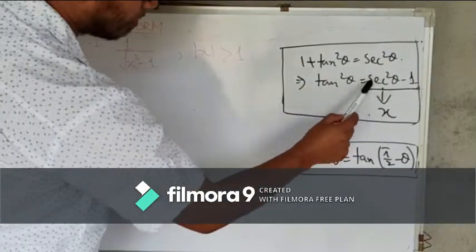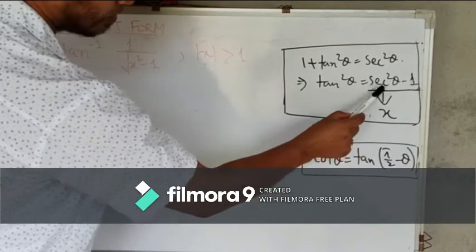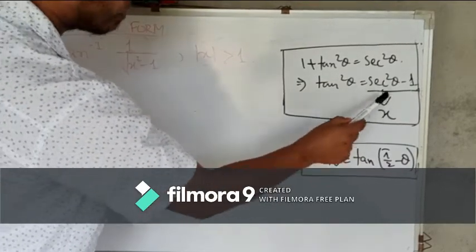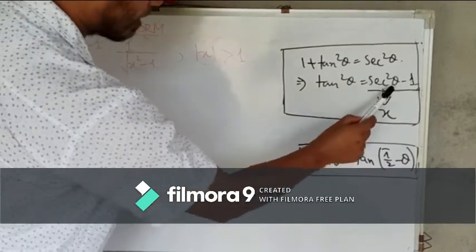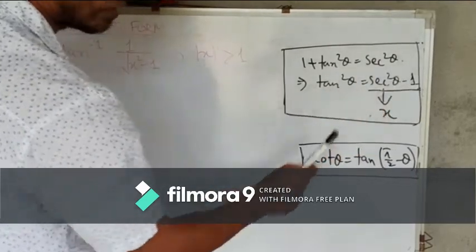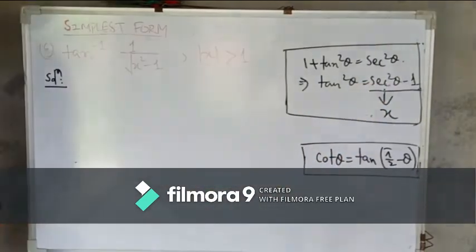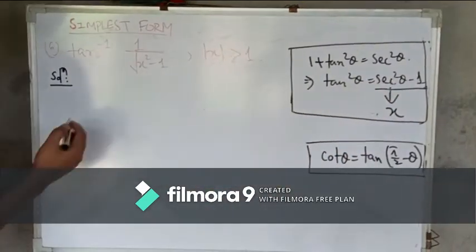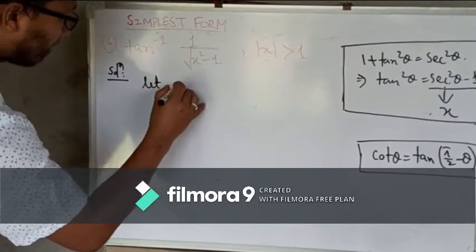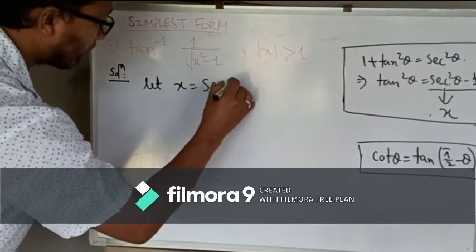So we can consider tan theta as x. You understand, I think? So x, we will take tan theta, so that it becomes tan squared theta minus 1, and then tan squared theta minus 1. So we will start like this: let x equal to tan theta.